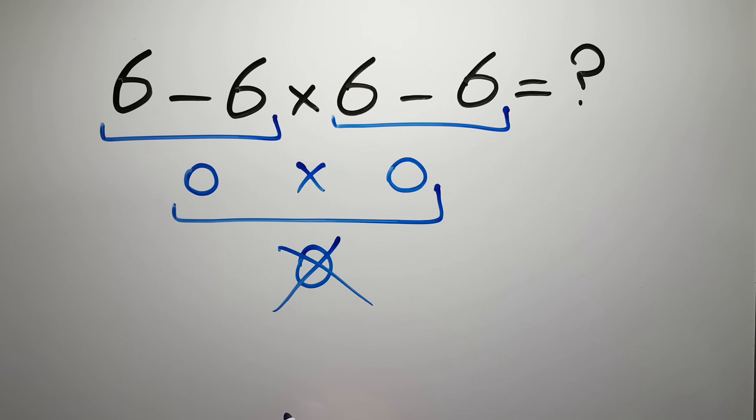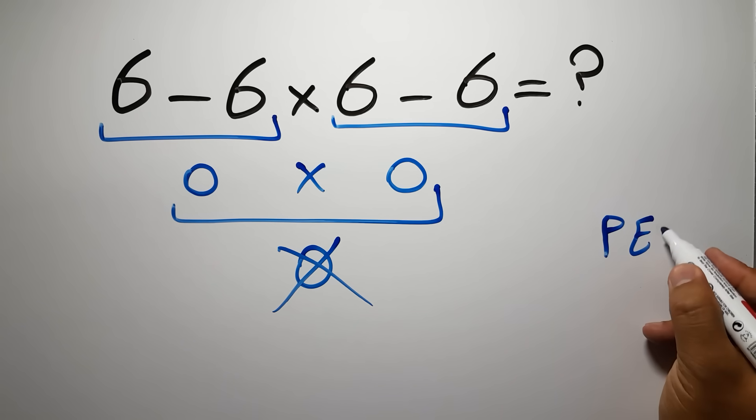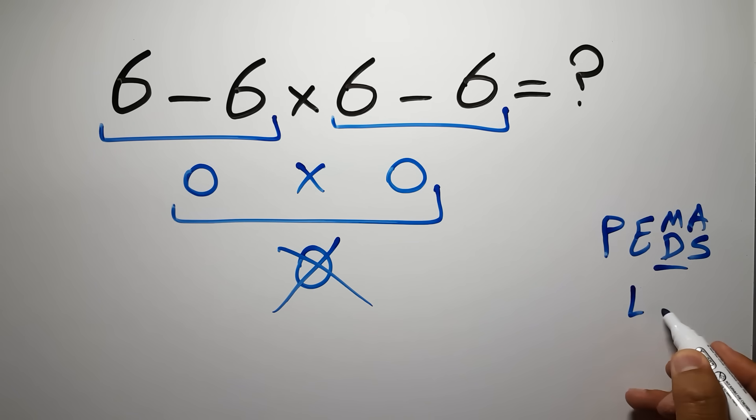But this answer is not correct, because according to the order of operations, first we have to do parentheses, then exponents, then multiplication or division, and finally addition or subtraction. Remember that multiplication and division have equal priority and we have to work from left to right, and the same applies to addition and subtraction.